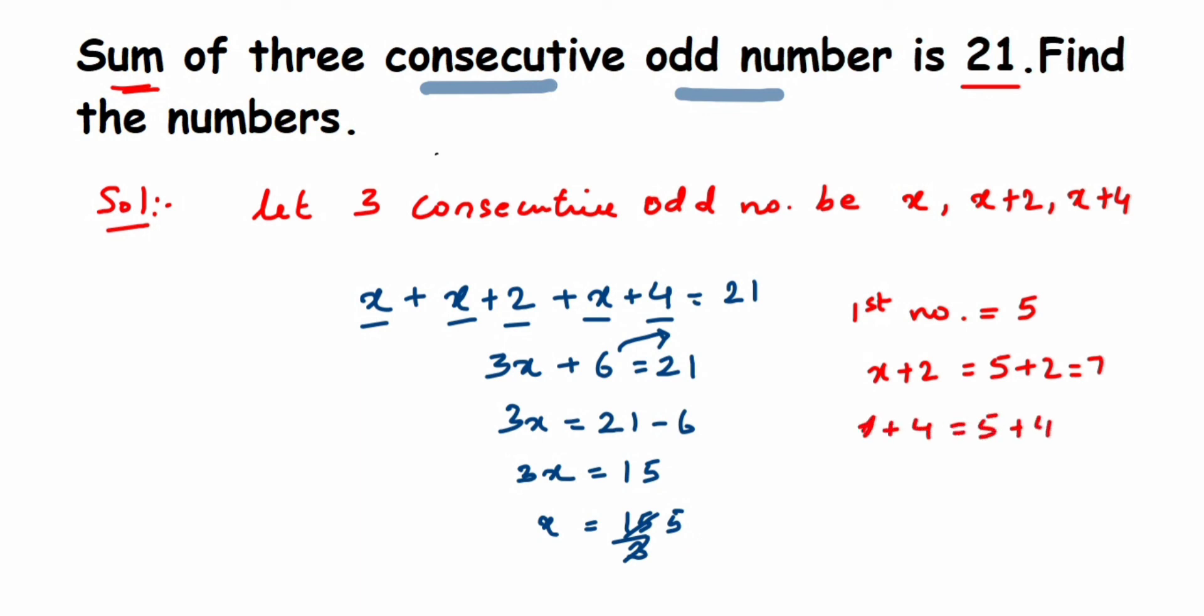From here we can conclude that therefore 5, 7, and 9 are three consecutive odd numbers. I hope it's clear now. In case you have any questions or doubts, you can drop a comment below. Thank you so much for watching.